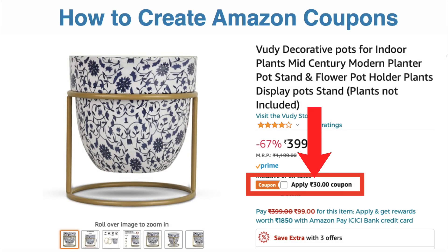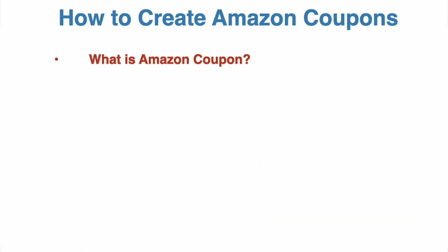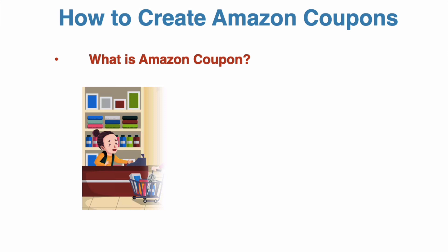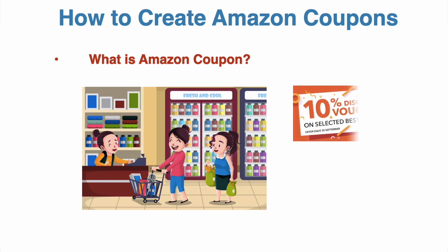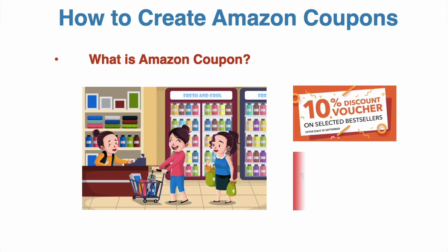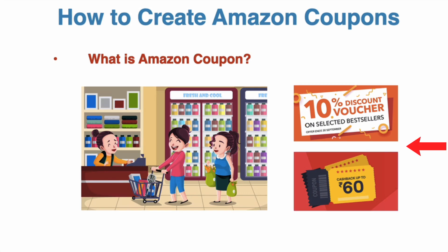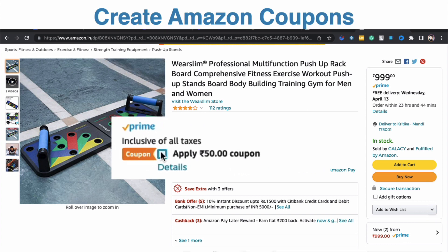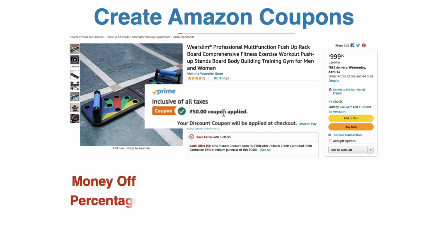In this video, we will talk about how you can create a coupon on your product. First, let's talk about what are Coupons. When we shop in the offline market, like malls or offline shops, we get a discount of 20% or Rs. 100 money off. Similarly, we can create a coupon on Amazon to promote your product. Coupons are of two types: first, you can give money off; second, you can give percentage off.